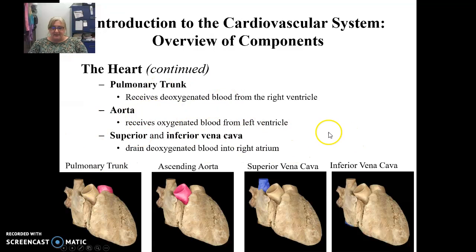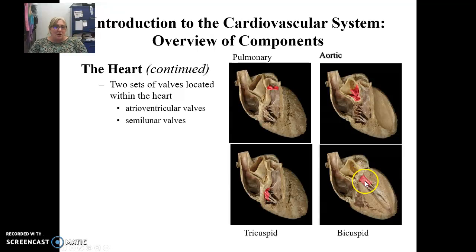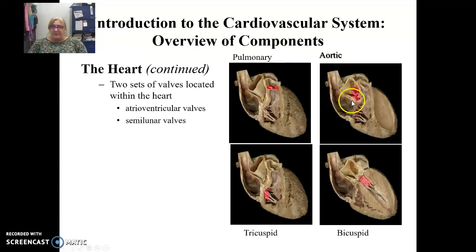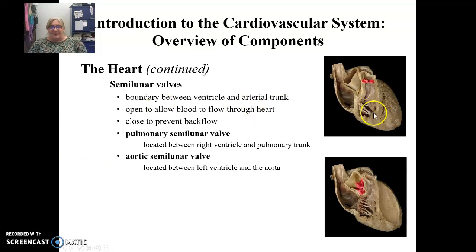The heart has two sets of valves. First are the atrioventricular valves, or AV valves: the tricuspid valve on the right and the bicuspid valve on the left. Second are the semilunar valves: the pulmonary semilunar valve and the aortic semilunar valve, which lead to the pulmonary trunk and the aorta respectively. The AV valves control blood flow from the atria to the ventricles, and the semilunar valves control blood flow from the ventricles to either the lungs or the body system.